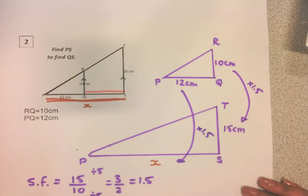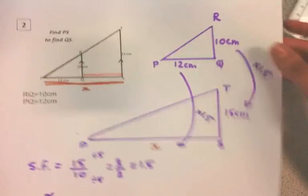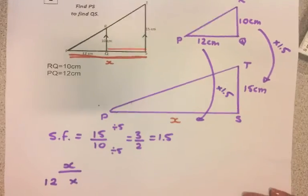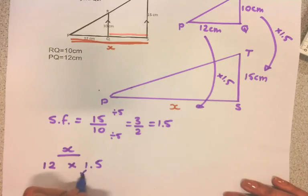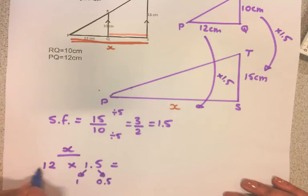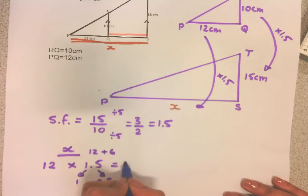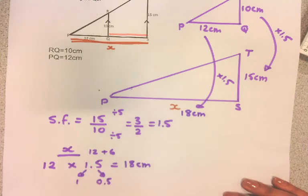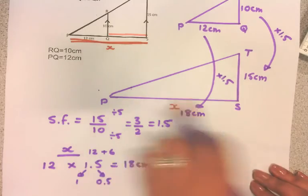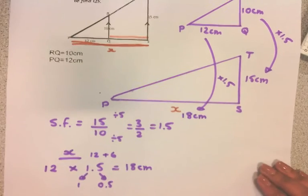To find length X, it's 12 times 1.5. To multiply by 1.5, I'm going to split it up into 1 and 0.5. 12 times 1 is 12. Half of 12 is 6. Add those together—it's 18 centimeters. So X is 18 centimeters. This whole length is 18 centimeters.